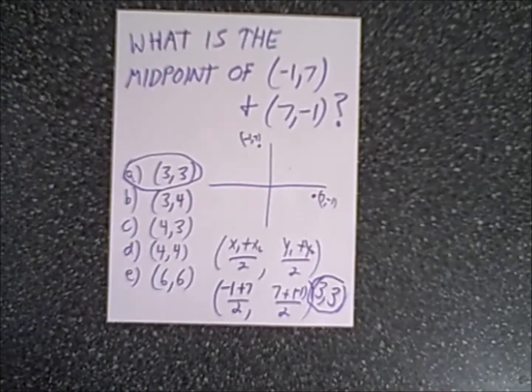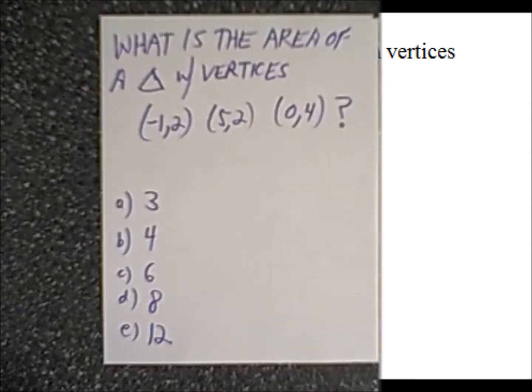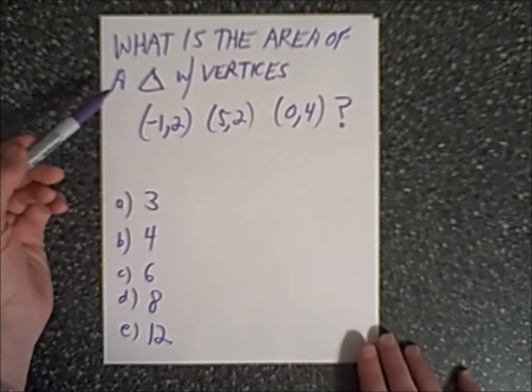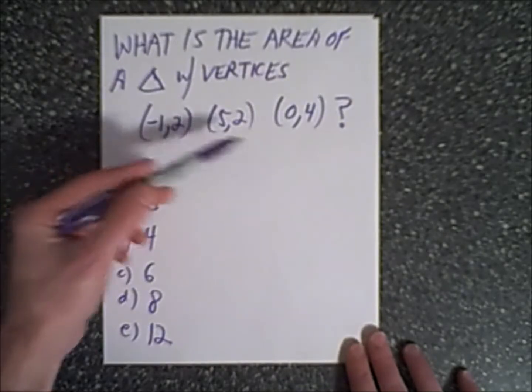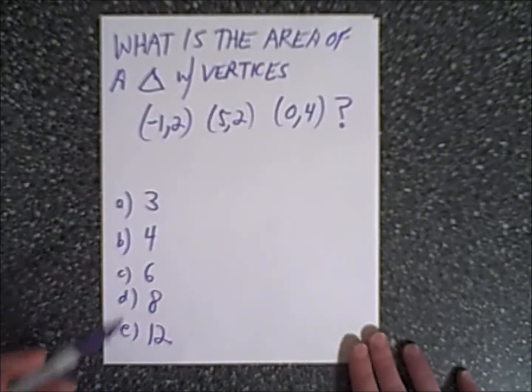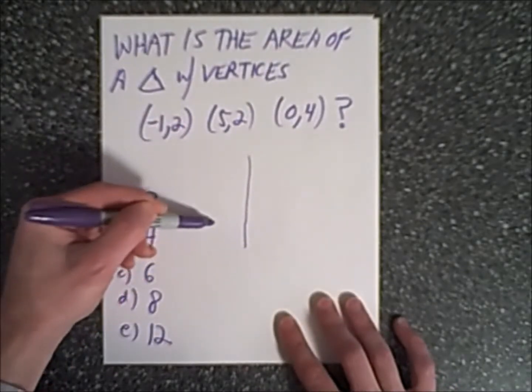What is the area of a triangle with vertices negative 1, 2, 5, 2, and 0, 4? The first thing we want to do is let's draw a quick sketch so we get a better view of this thing.